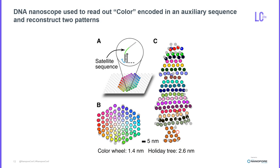We were also able to encode color information in auxiliary sequence tags and generate full color reconstructions of two different patterns — a color wheel and a holiday tree — as shown here.